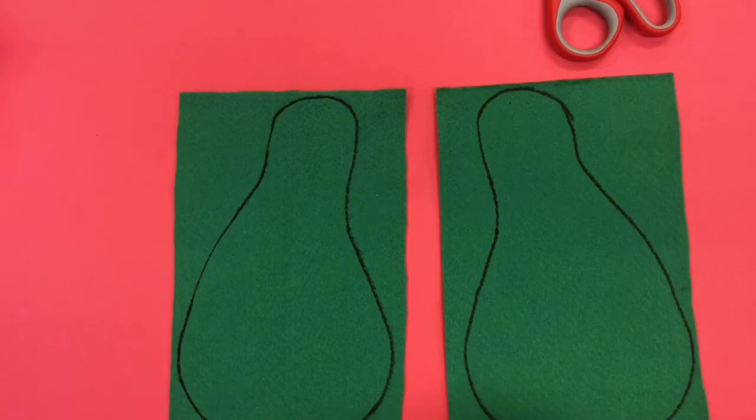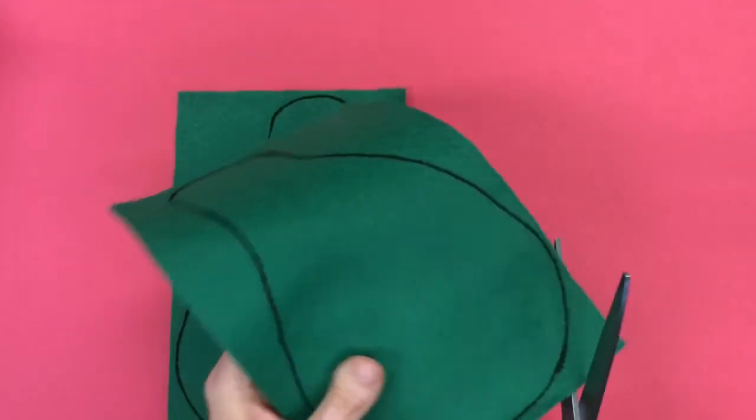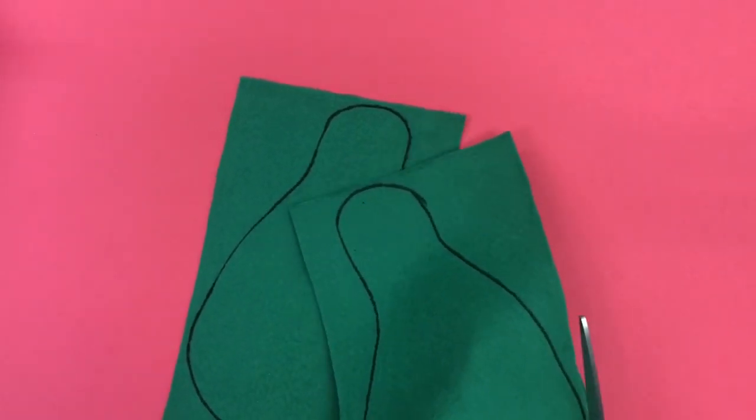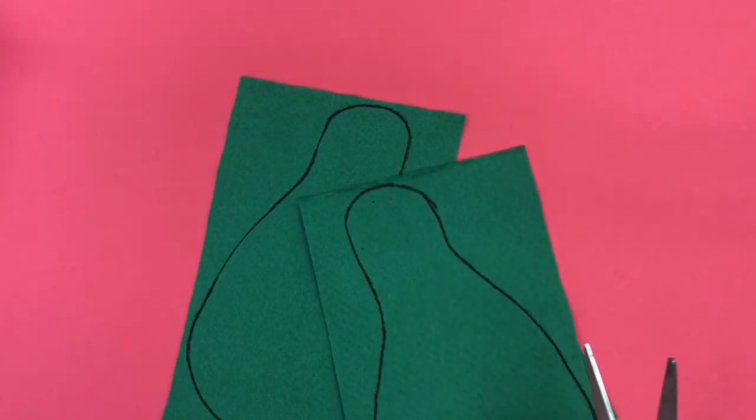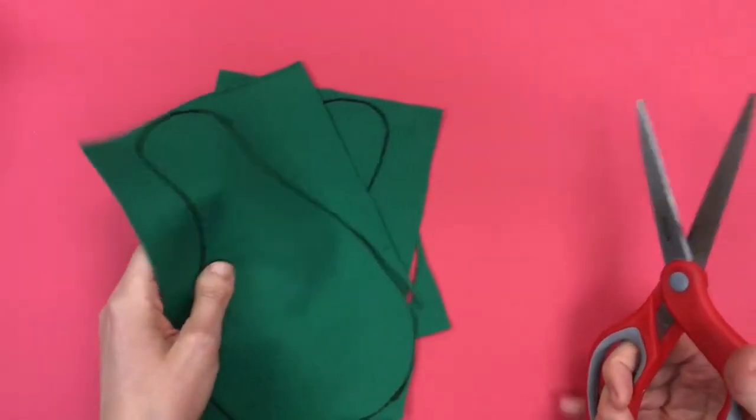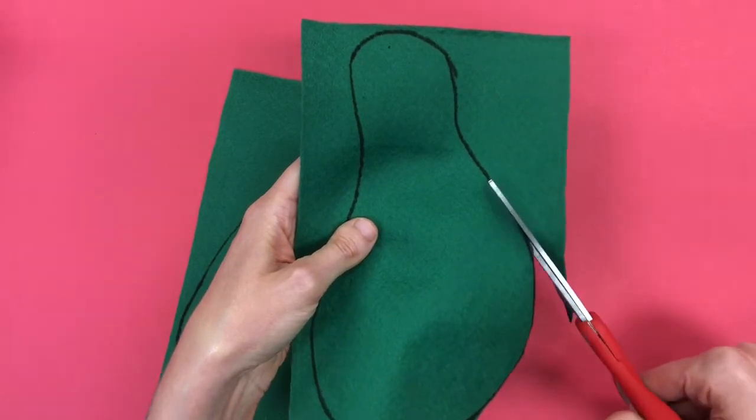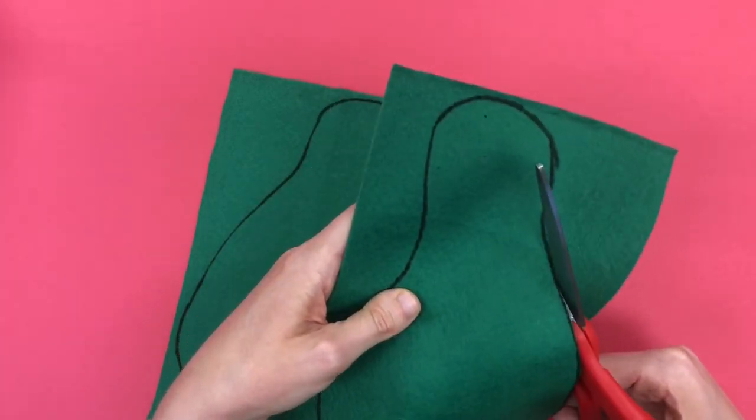Now that I've got both of those patterns traced I'm going to take a pair of scissors and very carefully cut right on the line. Using the inside of my scissors is going to give me more control than if I cut using the outside of my scissors. The inside I do have a lot of control.